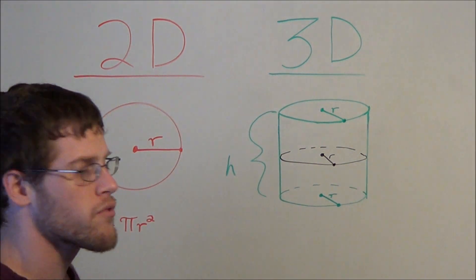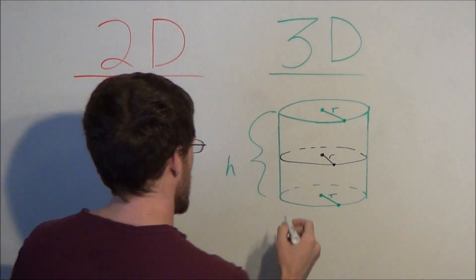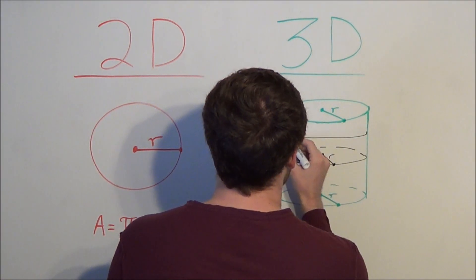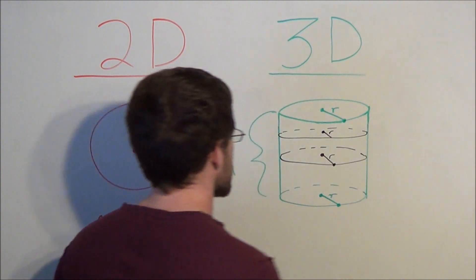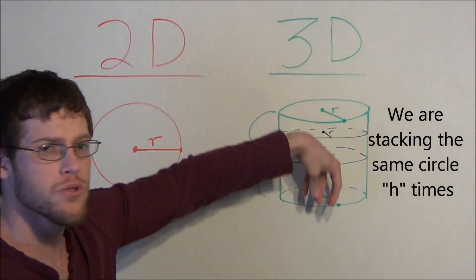So how does this help us generate an equation for the volume of a cylinder? Now it gives us a new interpretation of the volume of a cylinder. We can think about the volume of a cylinder as simply a stack of two-dimensional circles.